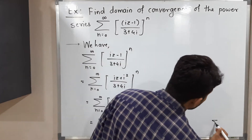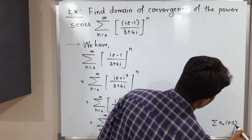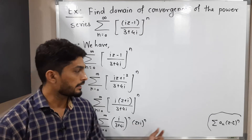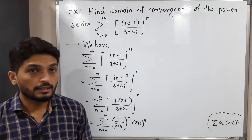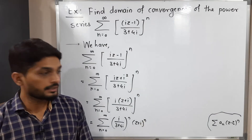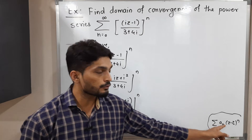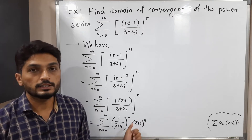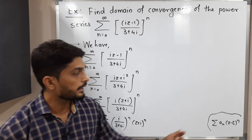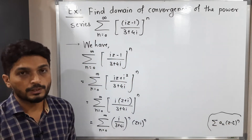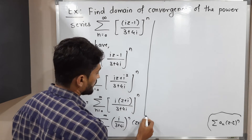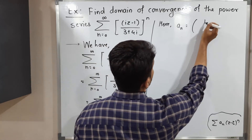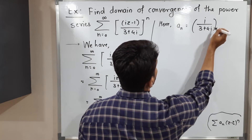The standard form is summation aₙ (z minus z₀) raised to n. Comparing our power series with the standard form, we have the bracket (z plus i) corresponding to (z minus z₀). Since in the standard form we have a minus sign, we write z minus (minus i), so z₀ is equal to minus i. And aₙ — the coefficient, which is the multiple of that bracket — is aₙ = (i upon 3 plus 4i) raised to n.